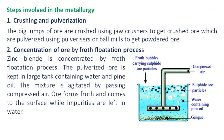Steps involved in the metallurgy. Crushing and pulverization: The big lumps of ore are crushed using jaw crushers to get crushed ore, which are then pulverized using pulverizers or ball mills to get powdered ore.